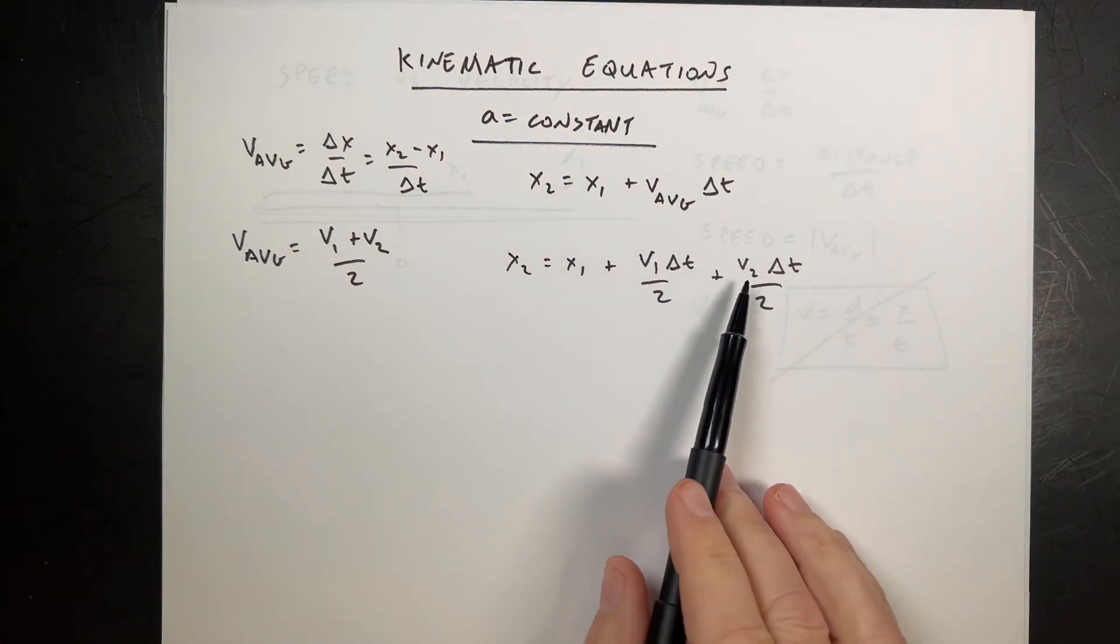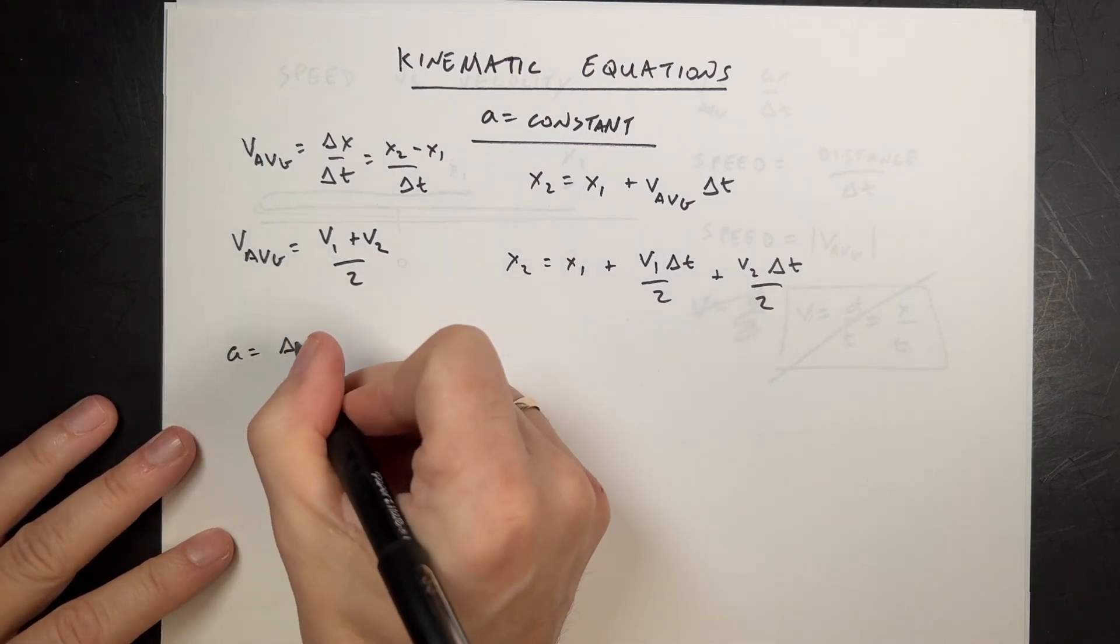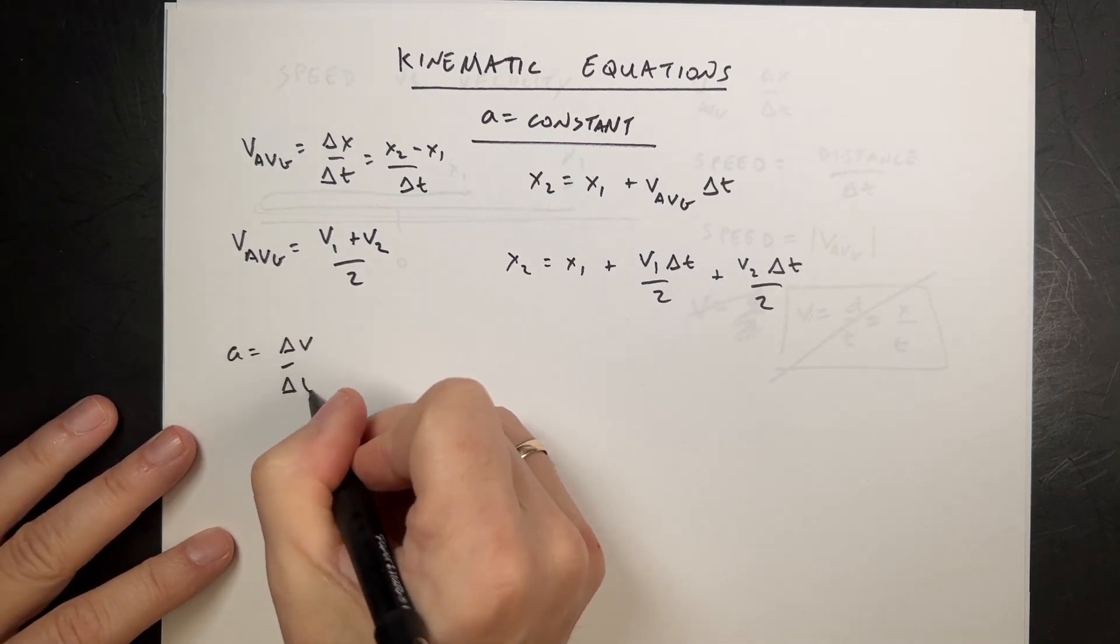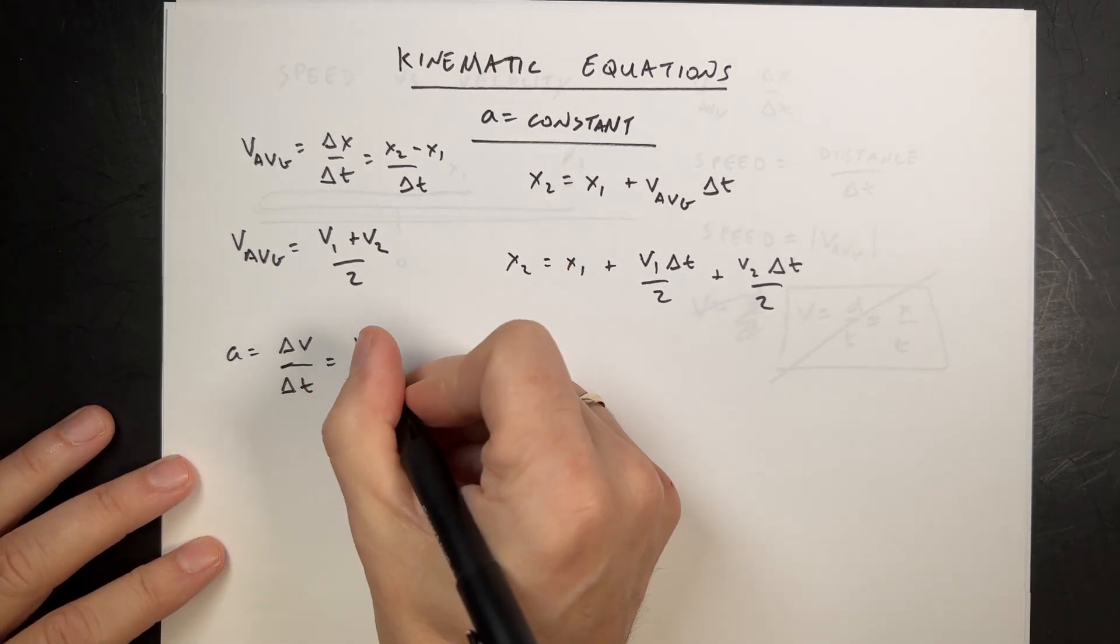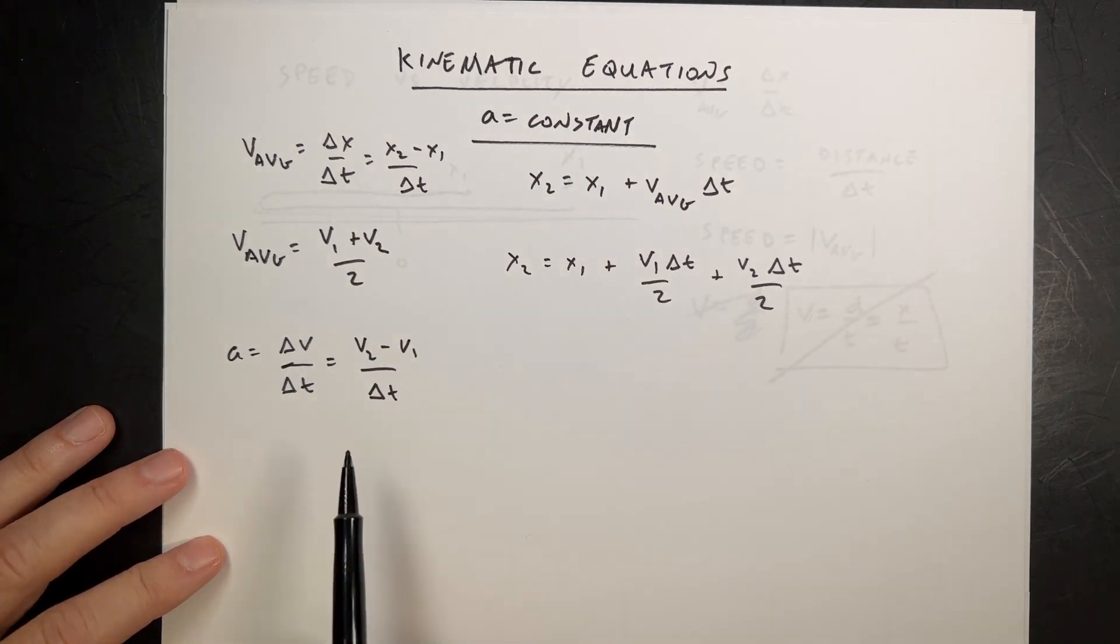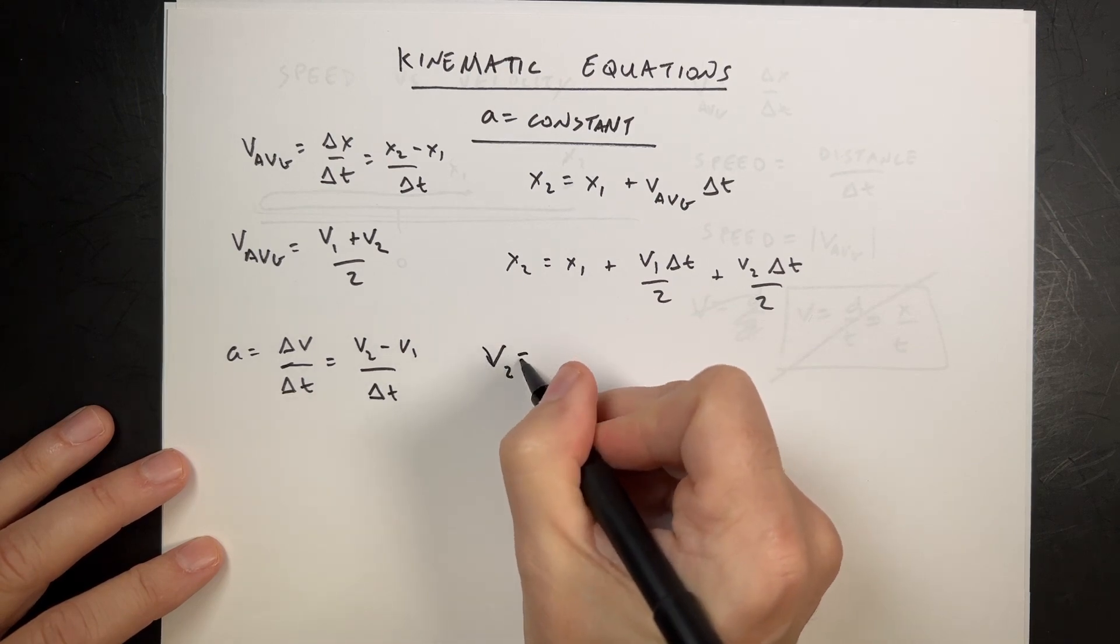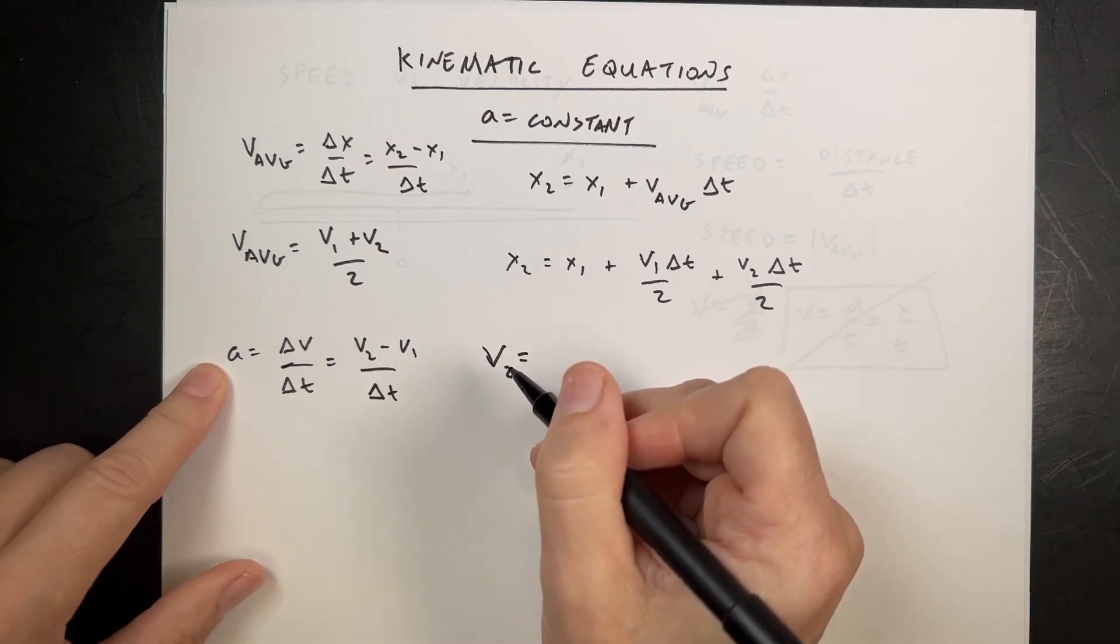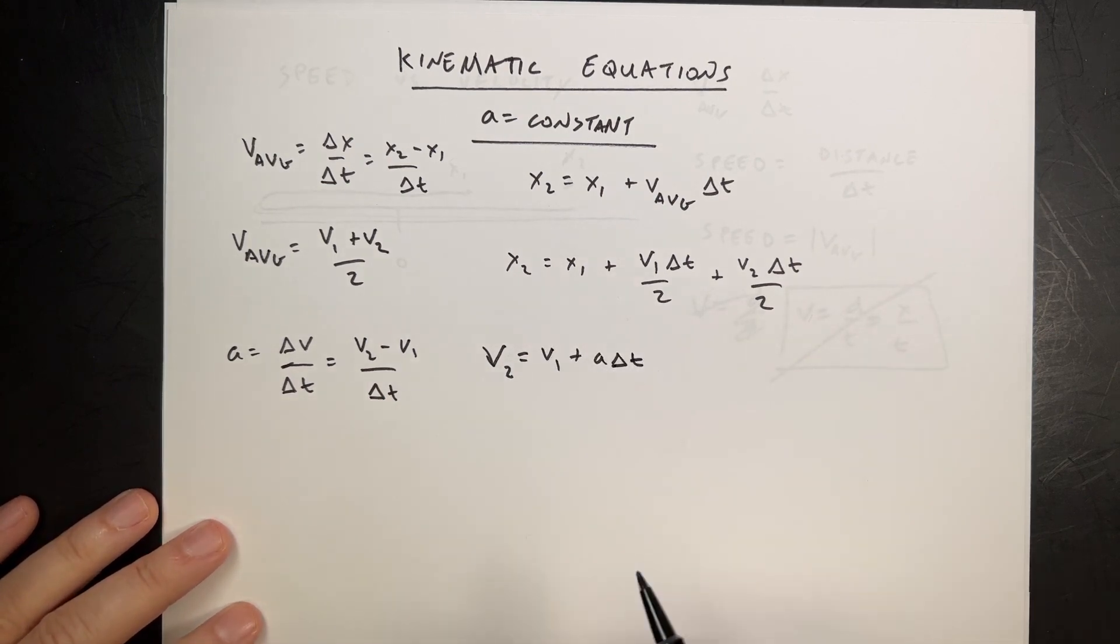Now, what I want to do is get an expression for v2. So let's use the definition of acceleration as delta v over delta t. I don't have to say average because it's constant. So this is v2 minus v1 over delta t. And if I solve this for v2, I can multiply it by delta t, add v1, I get v1 plus a delta t.